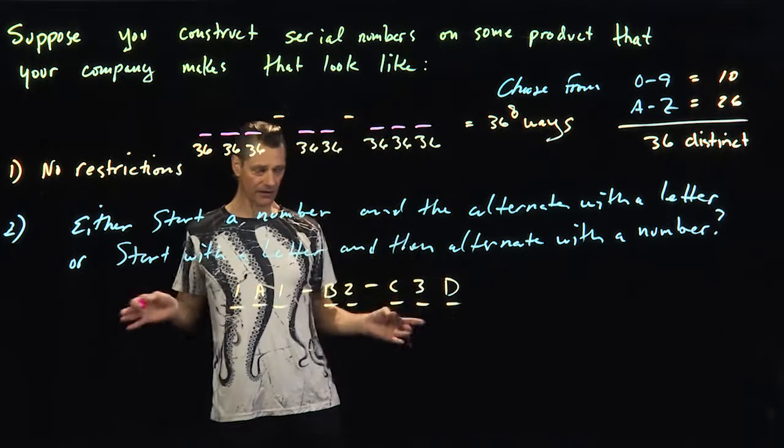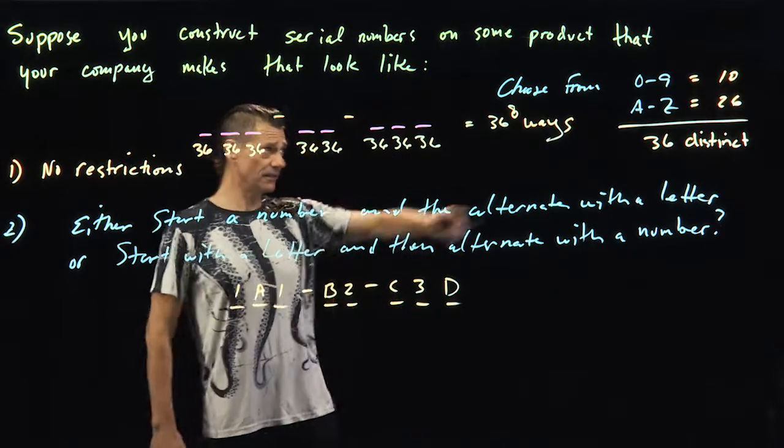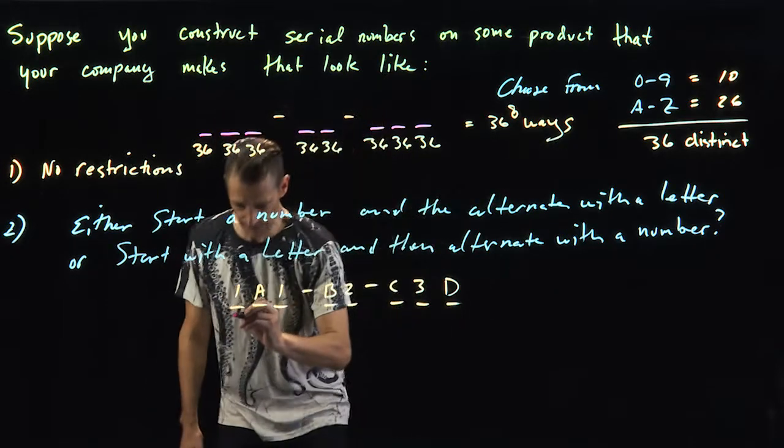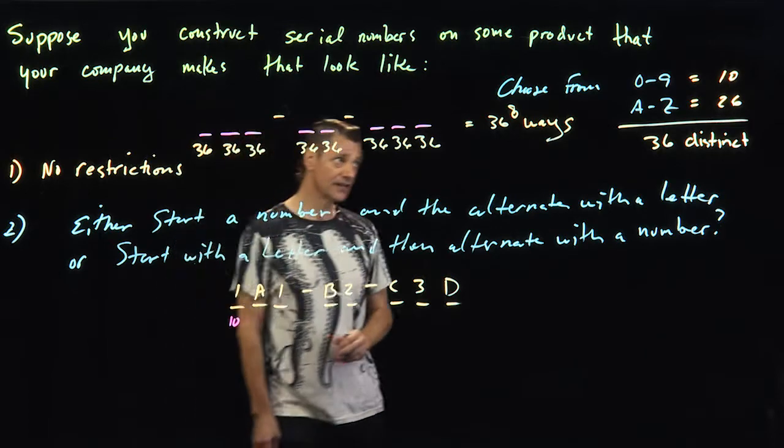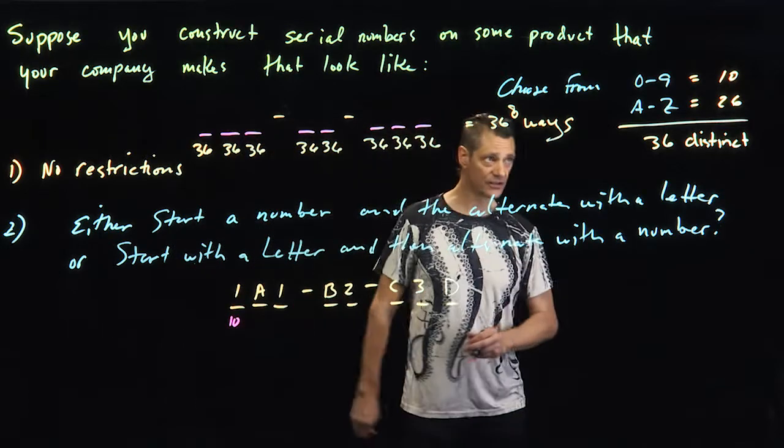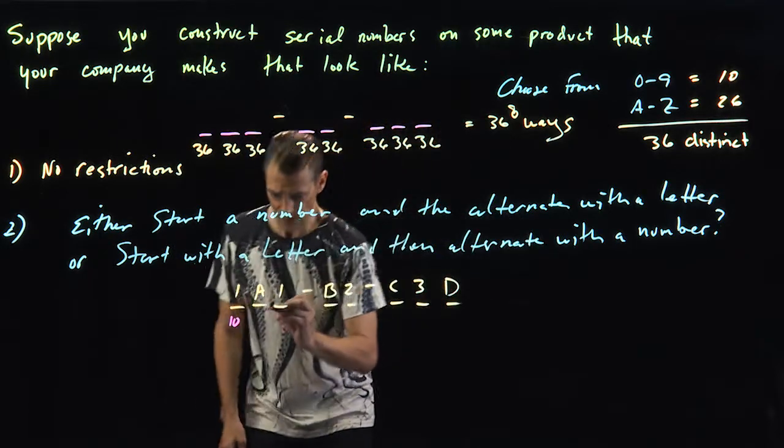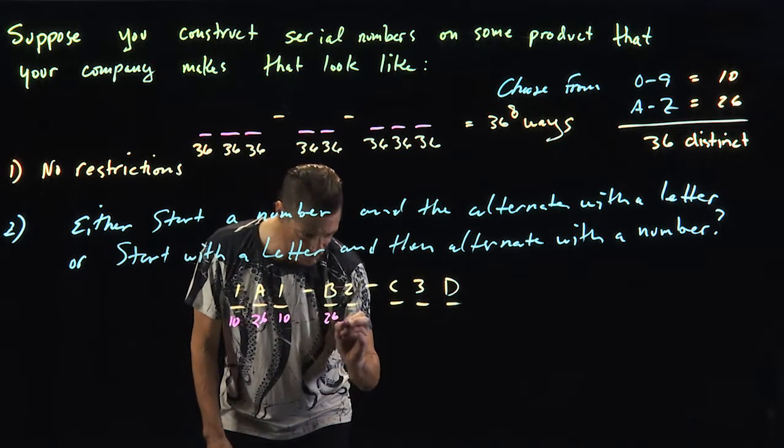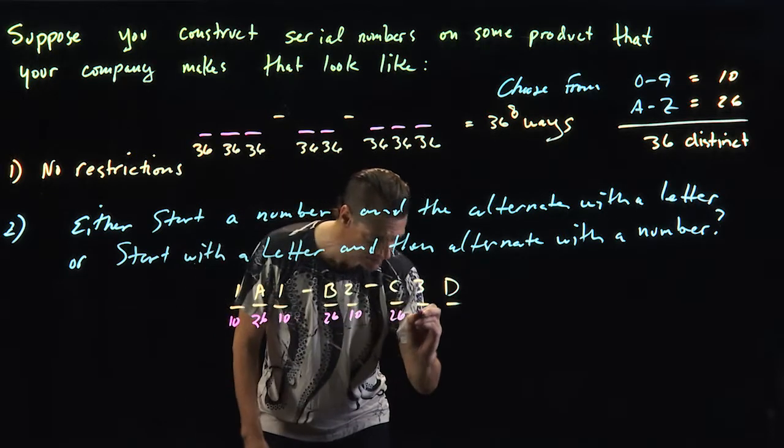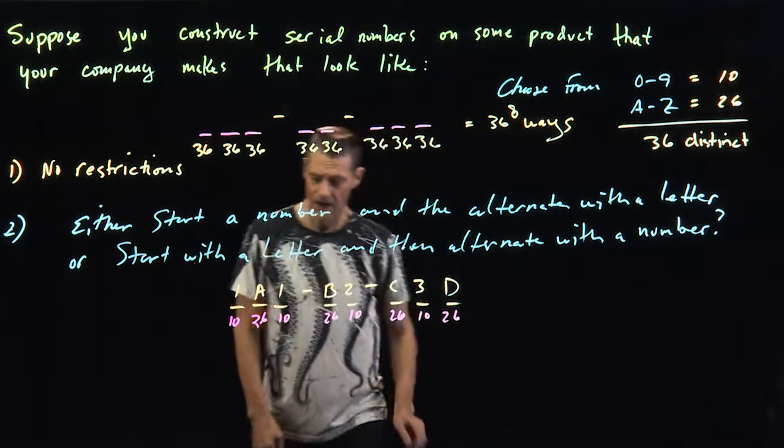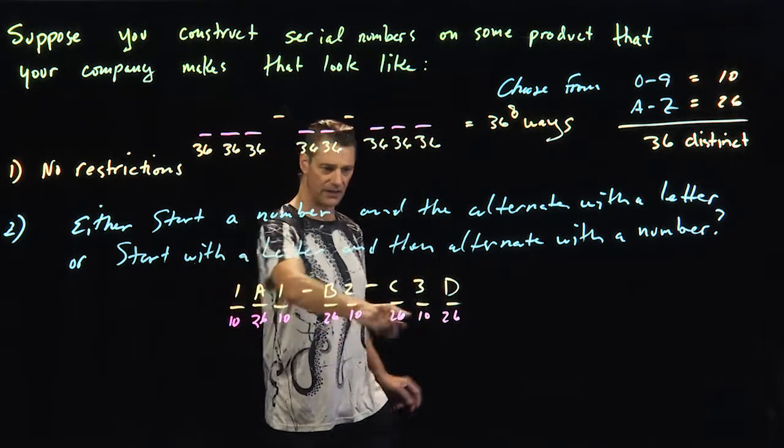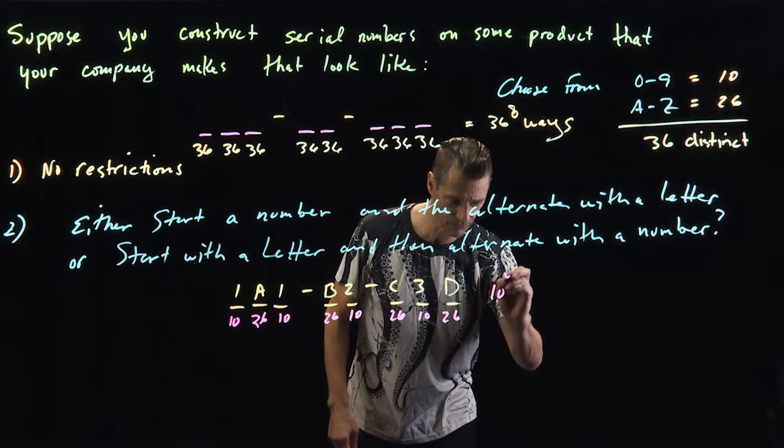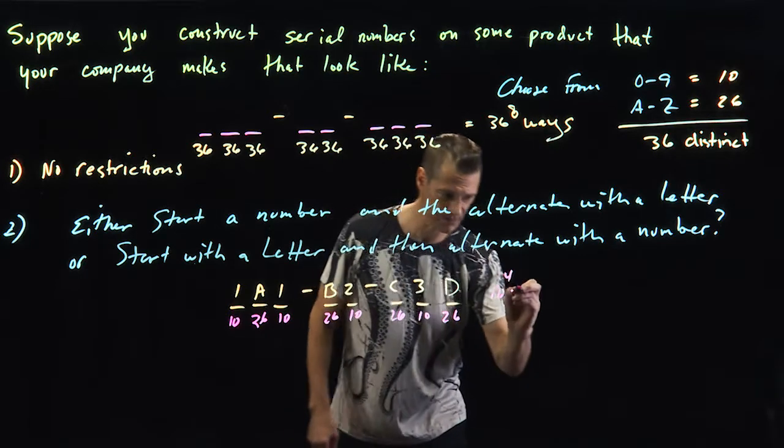And remember, repeats are allowed. So there's zero through nine distinct digits. This can happen ten ways. We're using American alphabet A through Z. There's 26 different letters. So this can happen 26 different ways. This can happen ten ways. 26, ten, 26, ten, 26. This is one, two, three, four. This is ten to the fourth times 26 to the fourth.